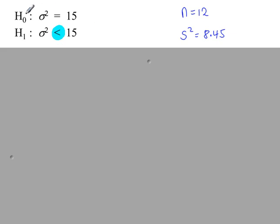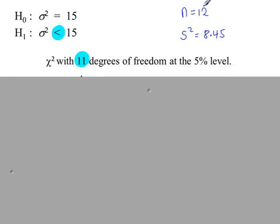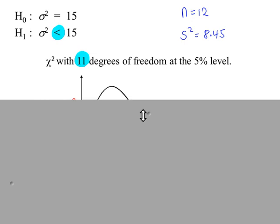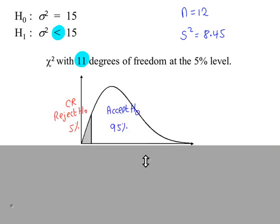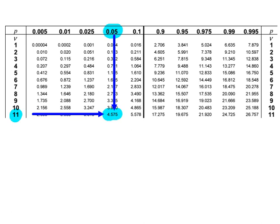So H0 and H1. N-1 is 11 — 11 degrees of freedom. In our sketch, because we're testing for less than, it's the lower tail on the left-hand side of the chi-squared distribution. 5% significance level, so the critical region has 5%, with 95% on the other side. Going to the chi-squared tables, looking up 5% with 11 degrees of freedom, here's the critical value: 4.575.